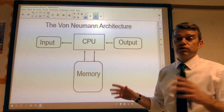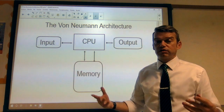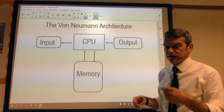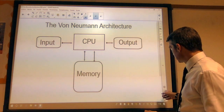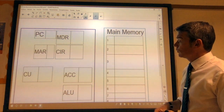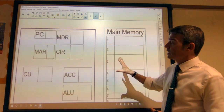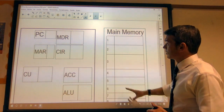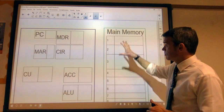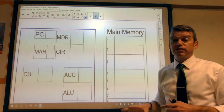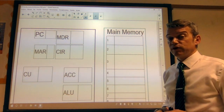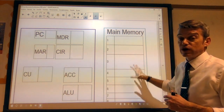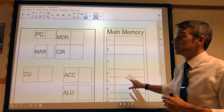What happens when you click on an icon and start a computer program running, start the instructions executing? The program is stored into the main memory. We have memory locations, which are numbered to identify those memory locations. The data and instructions are stored within those memory locations.